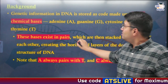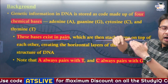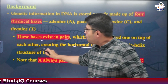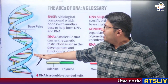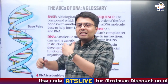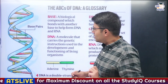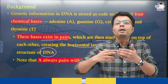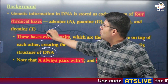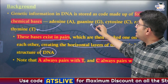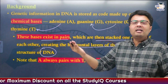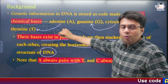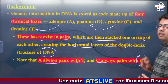These bases exist in pairs and are stacked on top of each other, creating horizontal layers of a double helix structure, and this double helix structure is what makes it a DNA. These base pairs can only be paired in a certain way — adenine can only be paired with thymine, whereas cytosine can only be paired with guanine. In case this pairing is affected, it automatically leads to abnormality in our DNA.